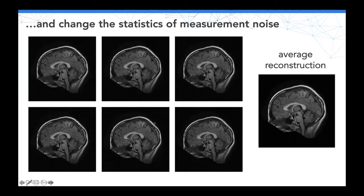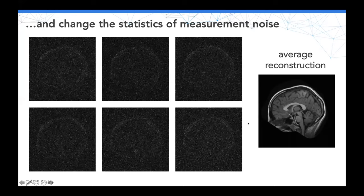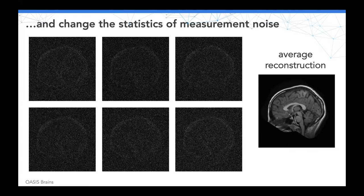If you take the same image, under-sample the Fourier coefficients, add noise, and reconstruct multiple times, the reconstructions look almost the same to the naked eye. But if you look at the stochastic perturbations — for instance the variance across reconstructions — you see artifacts: the variance of perturbations is higher near image discontinuities such as the boundary of the cranium. The question is whether these structured random patterns could act as adversarial perturbations to image classification techniques.